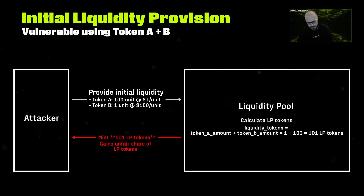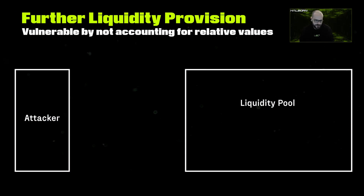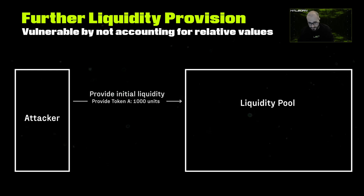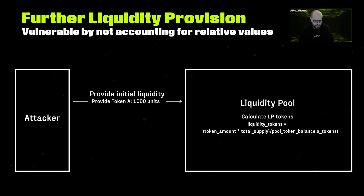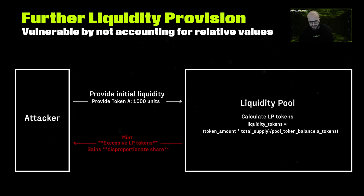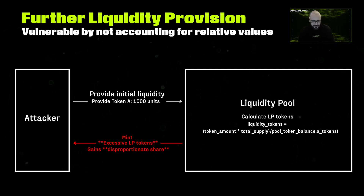Furthermore, when contributors add more tokens to the existing pool, there was another issue: the system calculates their shares based only on the token they are adding, without properly accounting for how much of the other token is needed to keep the pool balanced. This oversight allows people to manipulate their contributions to gain a bigger portion of the pool than they are entitled to, which can harm other participants and lead the system to financial disadvantage.